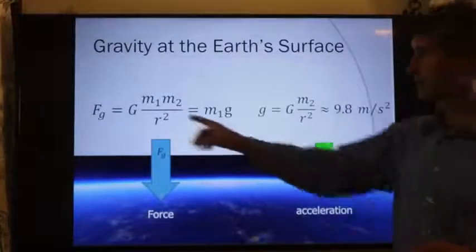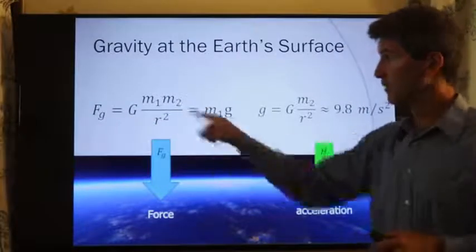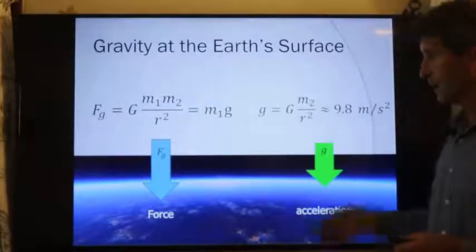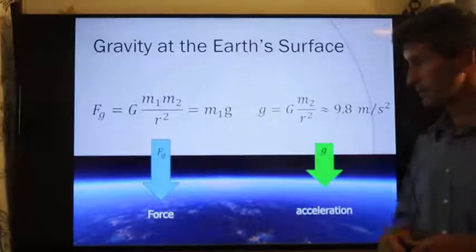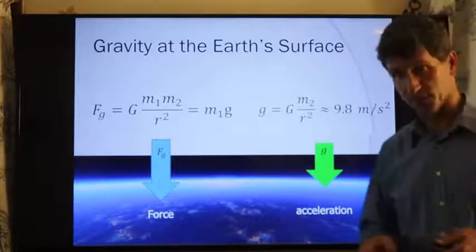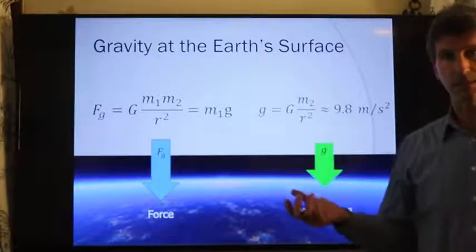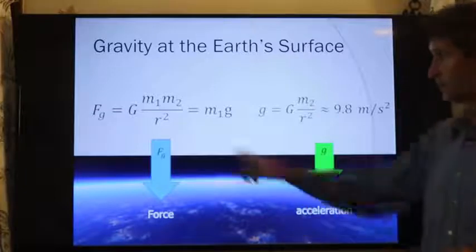Again, to make this gravitational force significant, one of these masses has to be very large. And for most of our examples, most of the case studies that we do, we use Earth, we use objects on the surface of the Earth. So, the mass of the Earth, which is about 10 to the 24 kilograms, goes here, and that balances out pretty nicely against the gravitational constant.